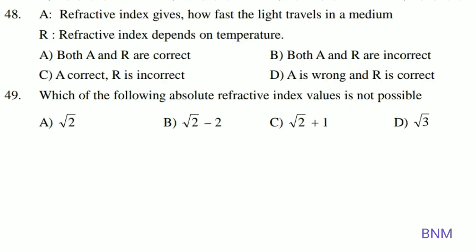Next. A refractive index indicates how fast light travels in a medium. The reason given states refractive index depends on temperature — this is a wrong statement, because refractive index is not dependent on temperature. The statement that refractive index gives how fast light travels in a medium is a right statement. Answer: A.